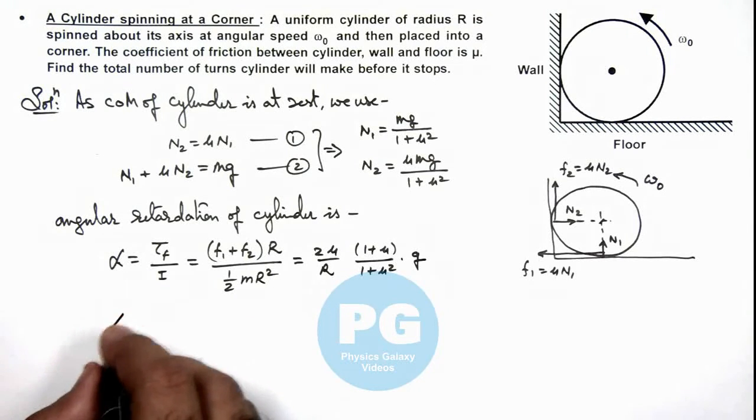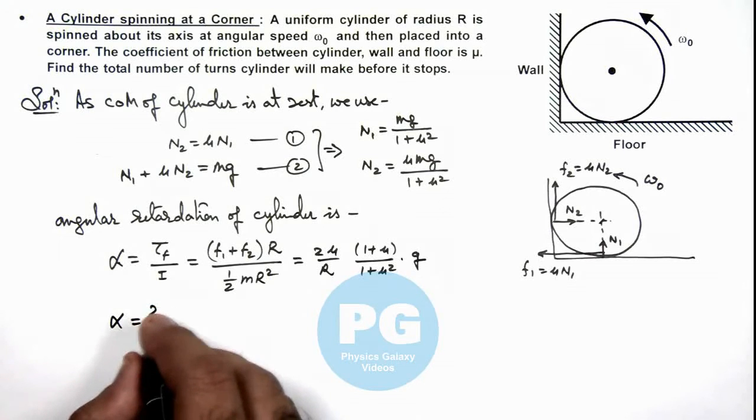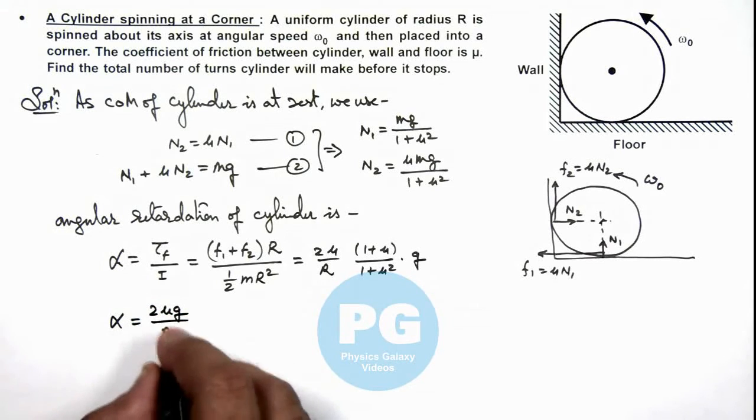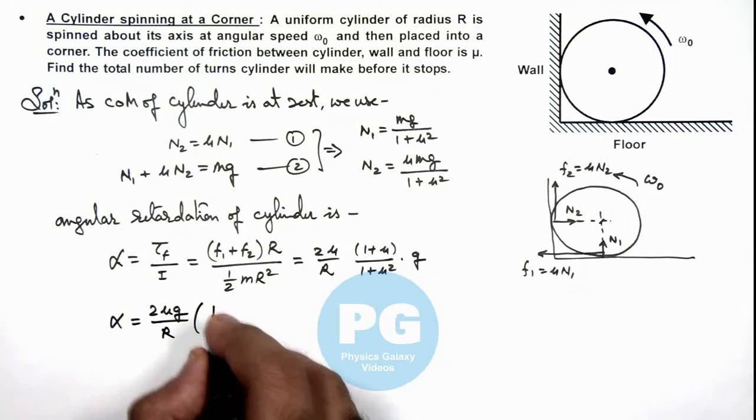So the value of angular acceleration we are getting is 2 mu g by r multiplied by 1 plus mu upon 1 plus mu squared.